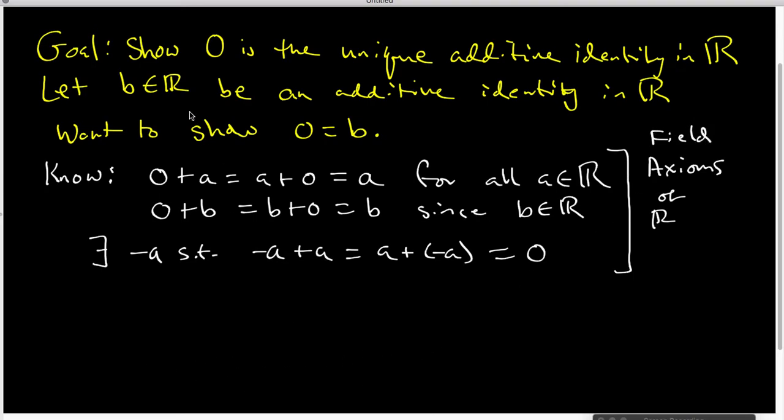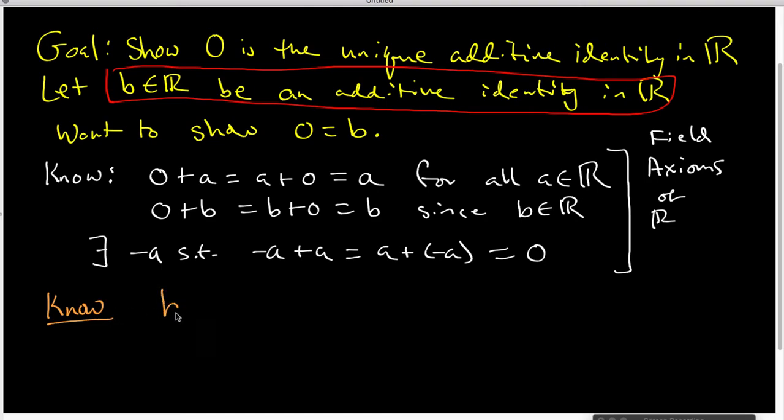Now, we have one more hypothesis. We have this hypothesis right here. And that hypothesis tells me a couple more things. It tells me that B+A is equal to A+B, and because B is an additive identity, when you add it to anything, you get the anything back. So this is by our hypothesis that I'm going to be starring.